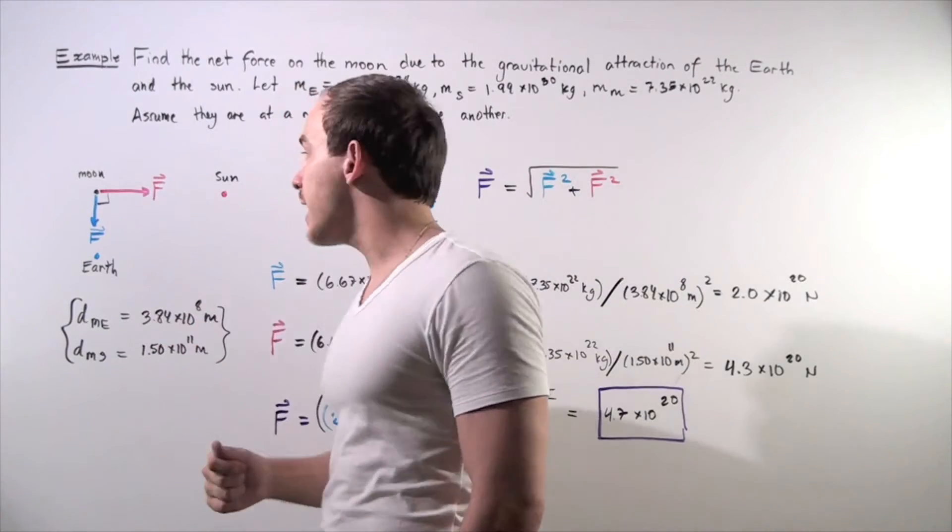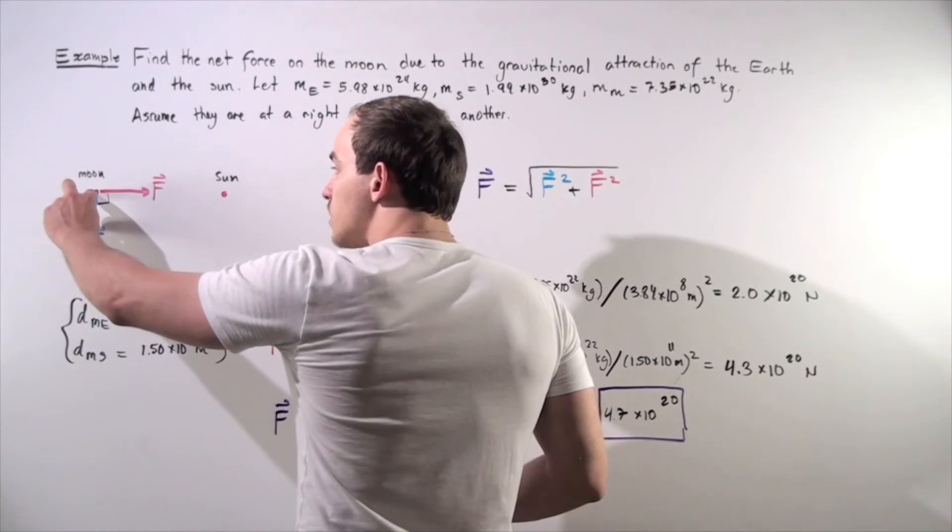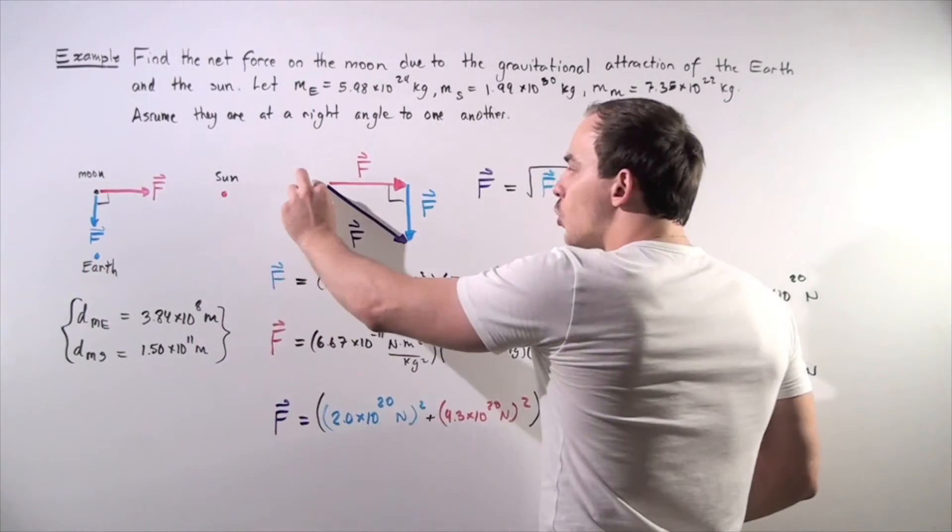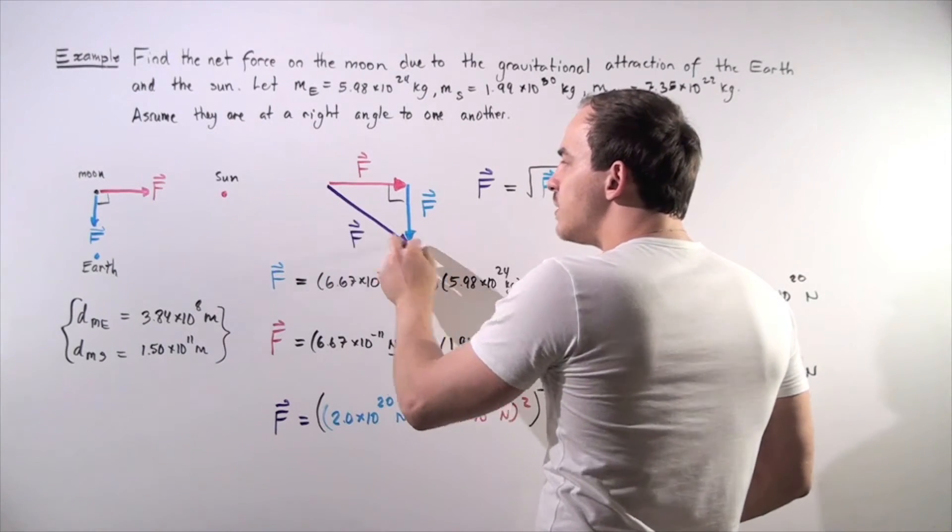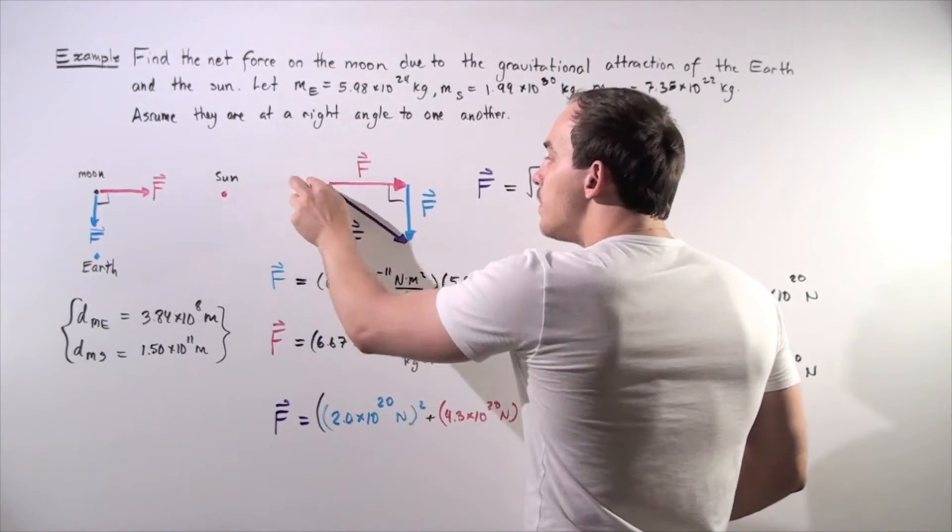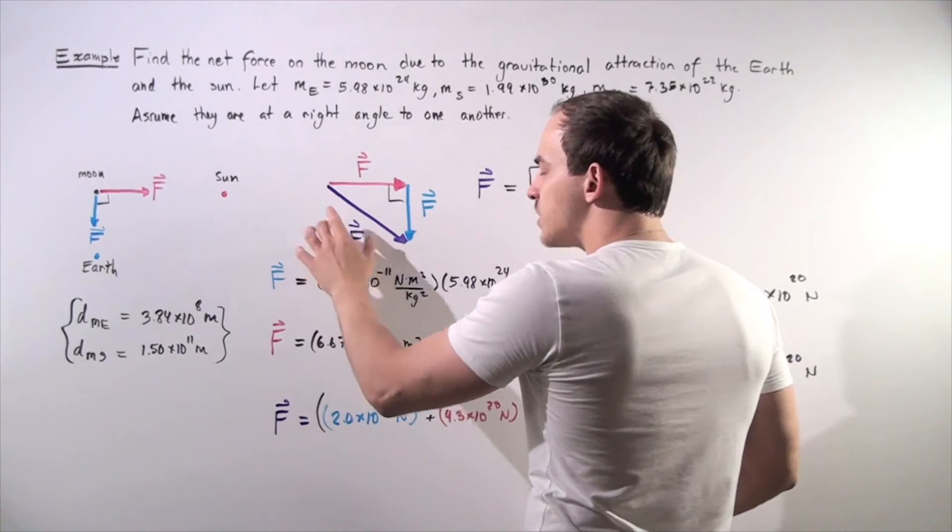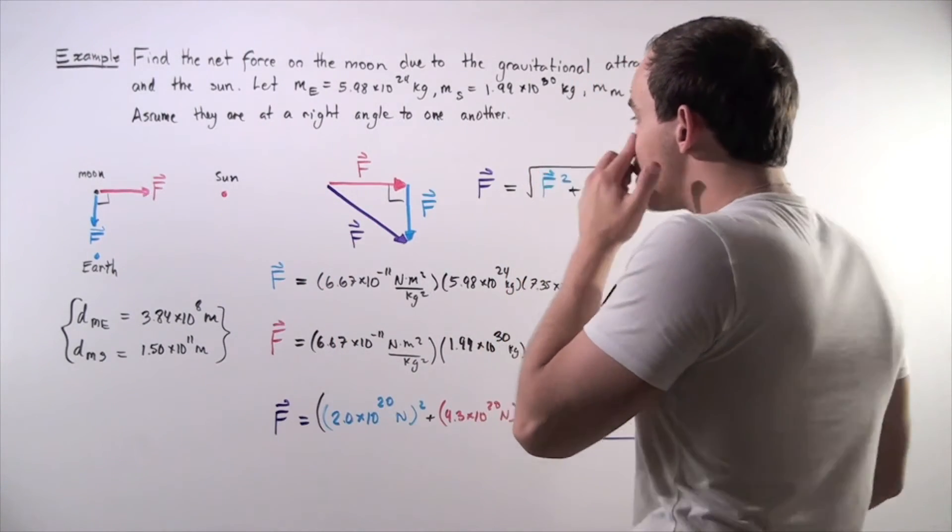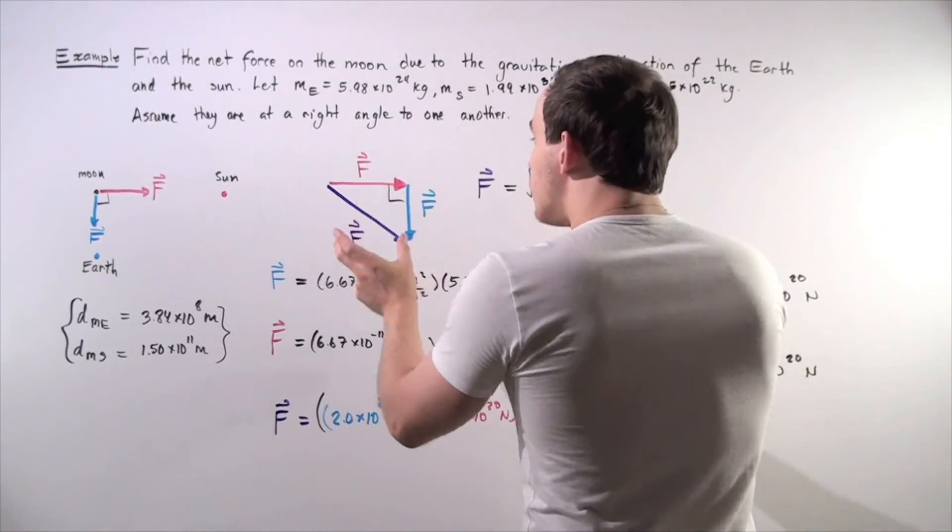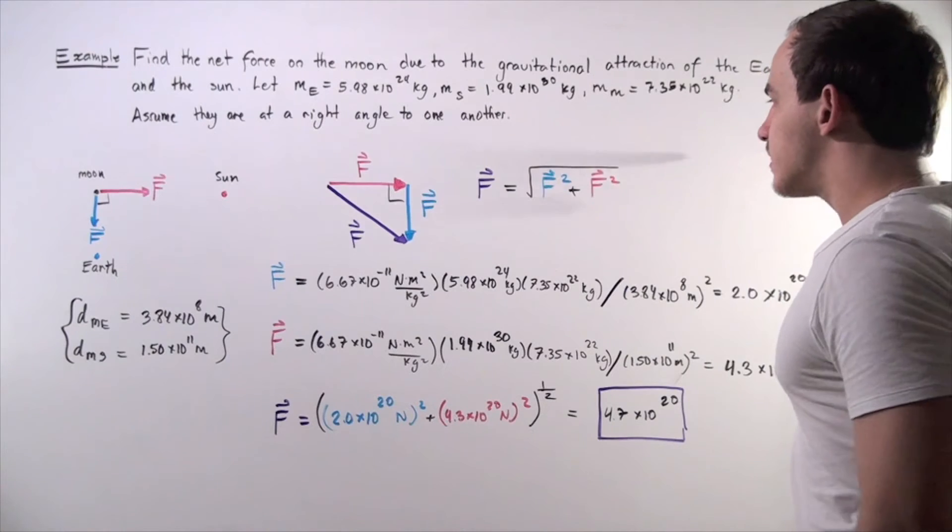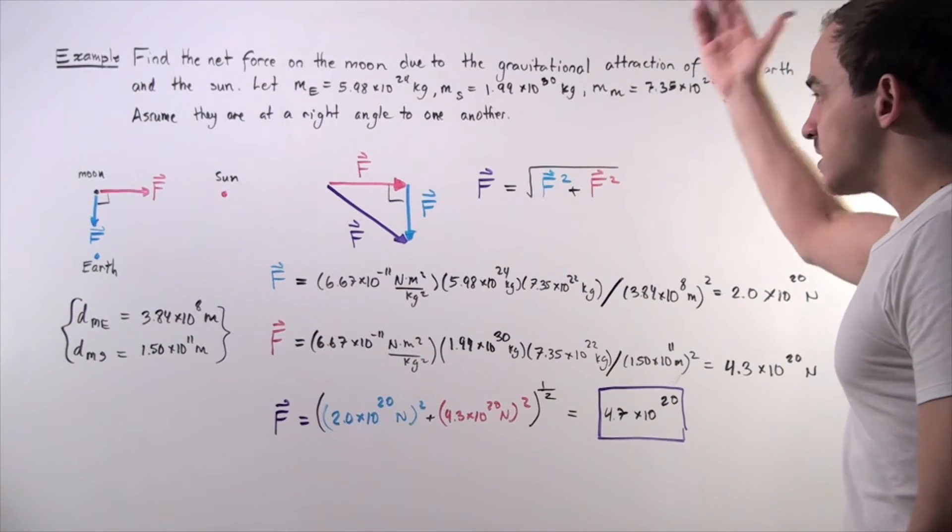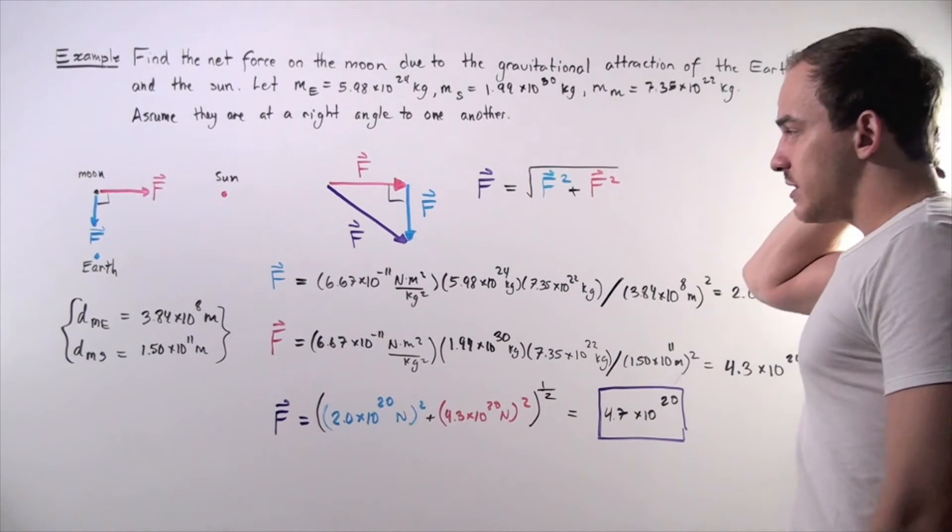So we build a right triangle. We take this force and move it here, and we draw the following force. The force will be given by the hypotenuse, the magnitude of our hypotenuse. This is our net force. To find that force, we simply take the sum of the squares of these two forces and take the radical of that value. This is given by Pythagorean theorem.